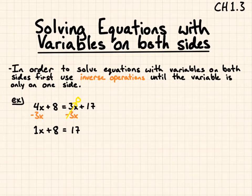Now, I can solve it like a one-step equation, or a two-step equation later on. 1x is the same as x, and I subtract 8 from both sides, and I end up with x equals 9. I can look back to it. So, 4 times 9 is 36, plus 8 gives me 44. Now, 3 times 9 is 27. 27 plus 17 does give me 44 as well. So, it checks out.